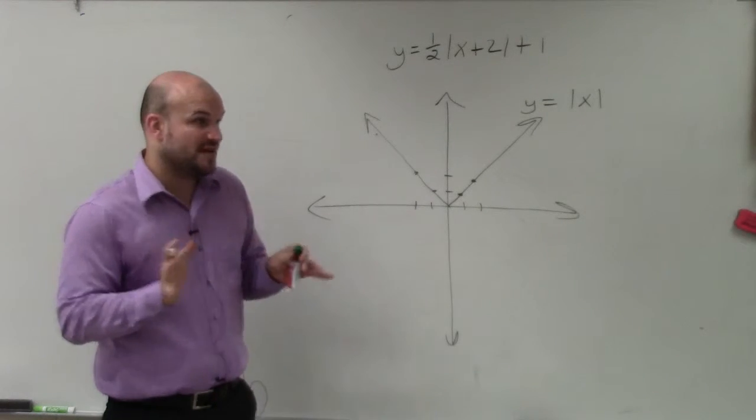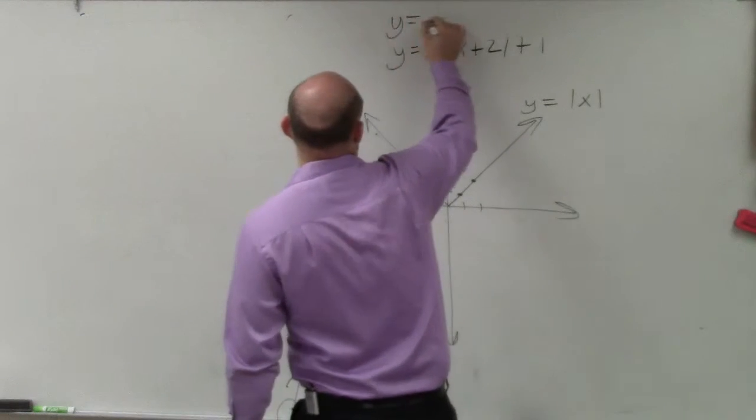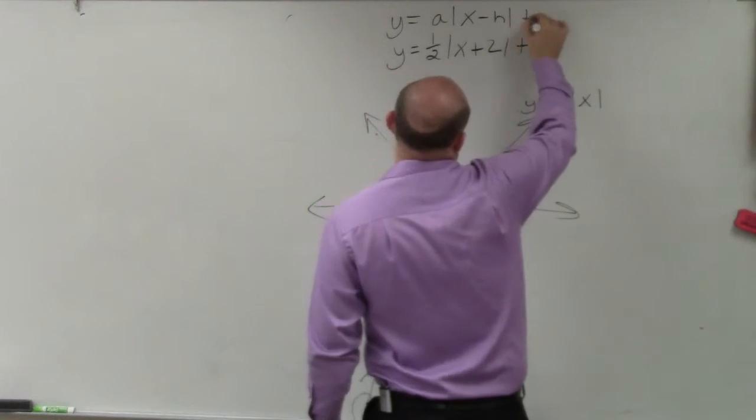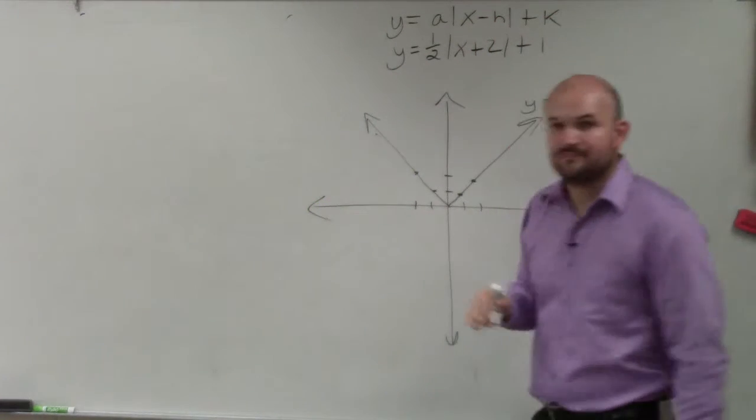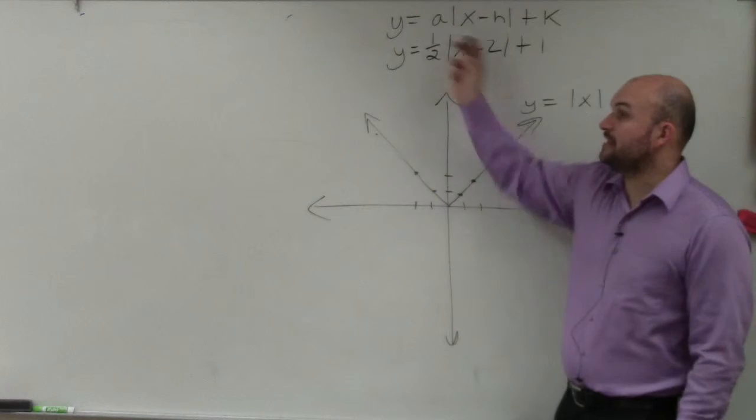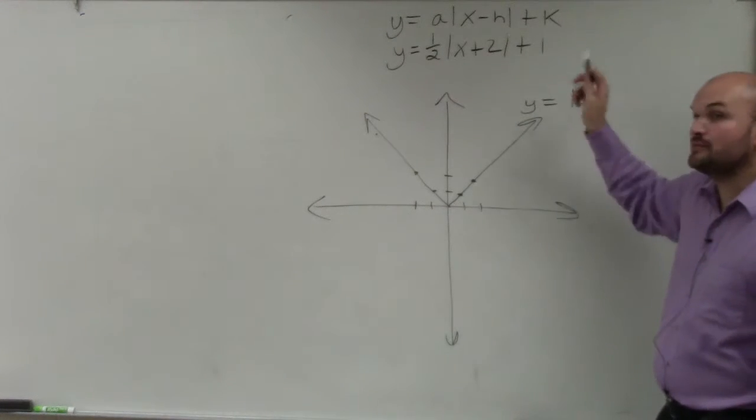Now, we do have some changes here. Remember the transformation equation. So we have some values now for a, we have some values for h, and we have some values for k.